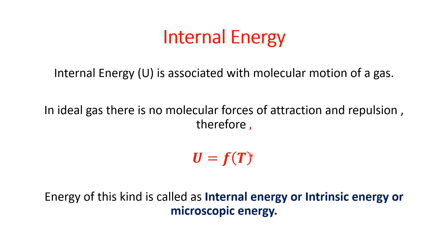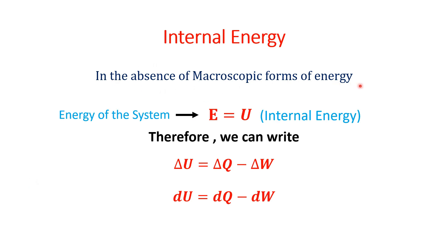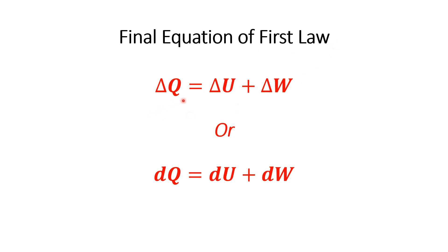For an ideal gas, internal energy U is a function of its absolute temperature, and we find that U = mcvΔT, where ΔT is the change in absolute temperature. In the absence of all macroscopic forms of energy — kinetic, potential, electrical, magnetic — E becomes equal to U. Therefore we can write: ΔU = ΔQ − ΔW, or dU = dQ − dW.